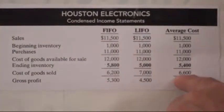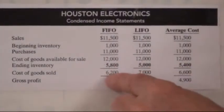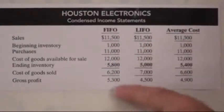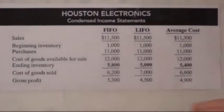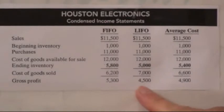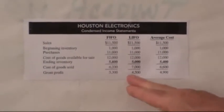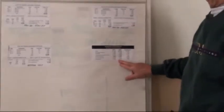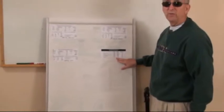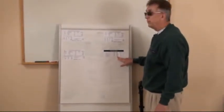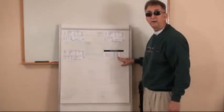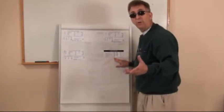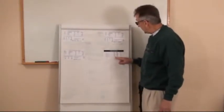When we subtract cost of goods sold from sales, we get gross profit — our markup. Notice LIFO produces the least gross profit, therefore the least net income and the least tax. FIFO produces the greatest. This holds true as long as inventory prices are rising during the year. If prices were decreasing, the results would be inverse — and you might want to switch from LIFO to FIFO, but should you?